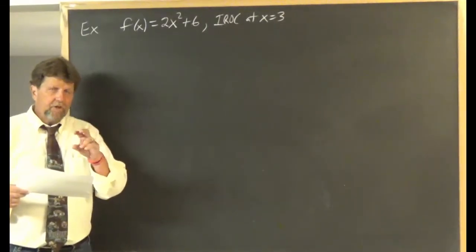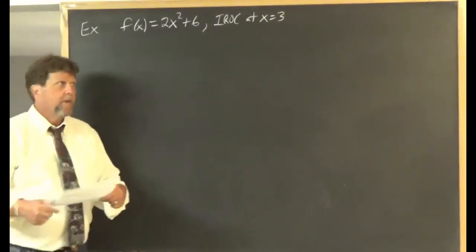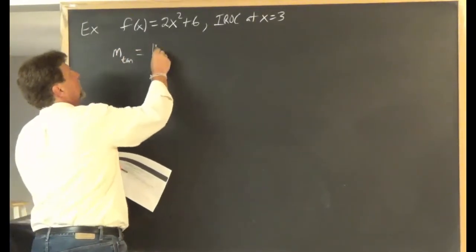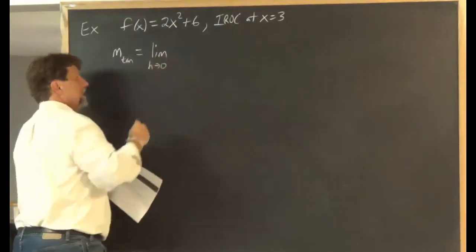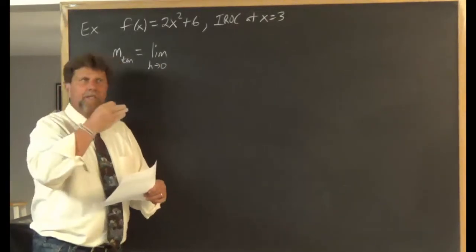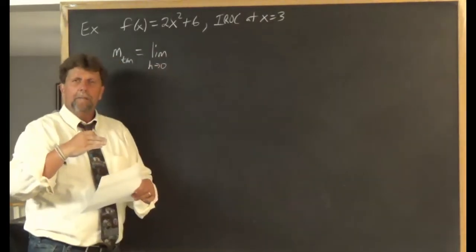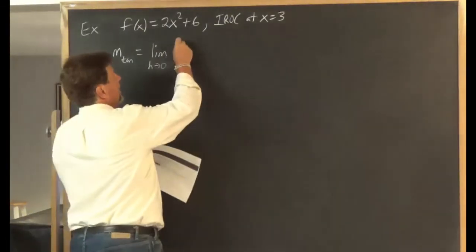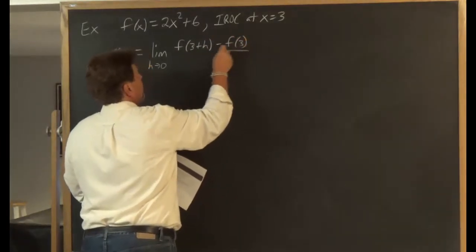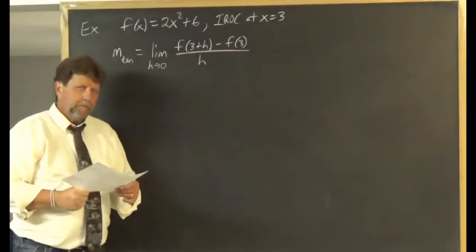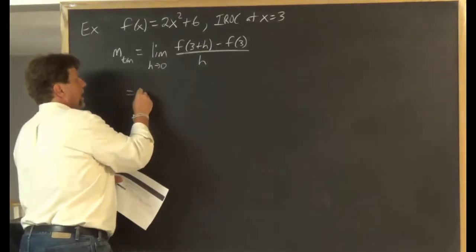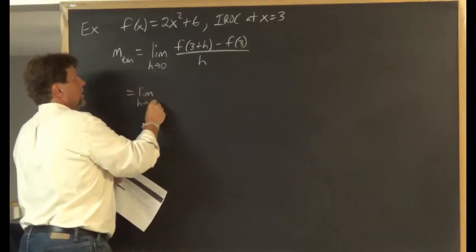The instantaneous rate of change is the same thing as the slope of a tangent line. So we need the slope of the tangent line, which is given by the limit as h approaches 0 of f of x plus h minus f of x all over h. Since we know x is 3, I'm going to put 3 in place of x: that would be the limit as h approaches 0 of f of 3 plus h minus f of 3 all over h.